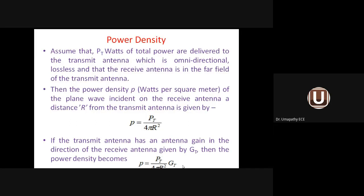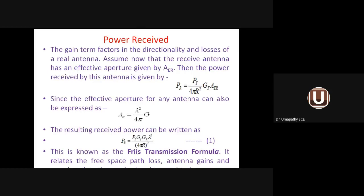If the transmitter antenna has gain G_t, then power density = P_t × G_t / (4πR²). The power received at the receiver antenna is P_r = (P_t × G_t / 4πR²) × A_er, which is power density multiplied by effective aperture A_er.